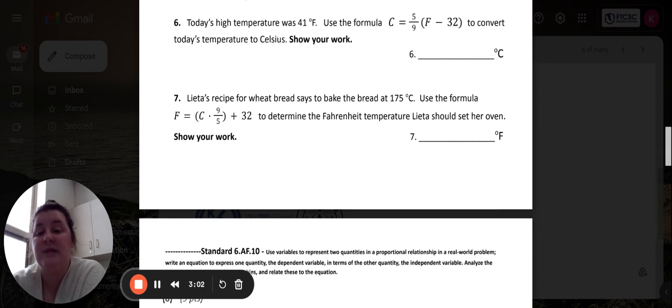Number six, I want you to convert from Fahrenheit to Celsius. So it says today's high temperature was 41 degrees Fahrenheit. Use the formula to convert today's temperature to Celsius. Again, you have to show your work.